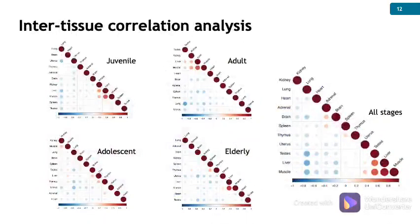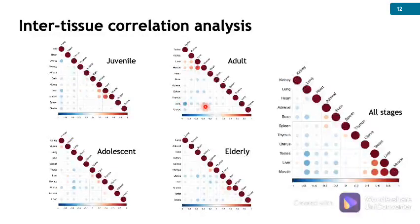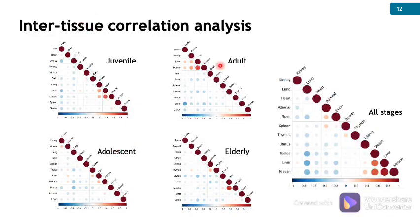We next performed inter-tissue correlation analysis based on the presence and absence of sets of species in each tissue. The area of the dots is proportional to their Spearman correlation coefficients, and the color indicates the strength of correlation — red for positive and blue for negative correlations. Positive correlations can be seen between liver, muscle, and kidney microbiomes. Strong negative correlations between lung and other tissues can be seen in the juvenile, adolescent, and adult stages. The negative correlations were significantly weakened in the elderly lungs, which agrees well with our previous PCoA results.